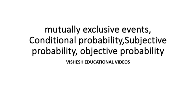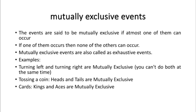First I will start with mutually exclusive events. The events are said to be mutually exclusive if at most one of them can occur. In other words, if one event is occurring, no other events can occur simultaneously. For example, if there are 10 events and the first event is happening, then the remaining nine events cannot occur at the same time.